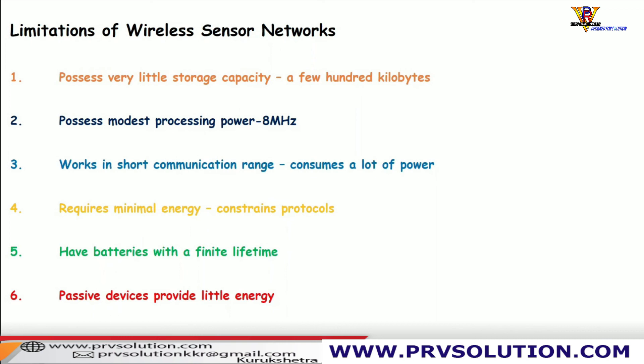Further limitations include minimal energy requirements for their own operation — if energy drops below a threshold, data cannot be processed. Additionally, the power stored in batteries has a finite lifetime; the batteries cannot be used for an infinitely large time. Passive devices also provide little energy. These are the key limitations of wireless sensor networks.